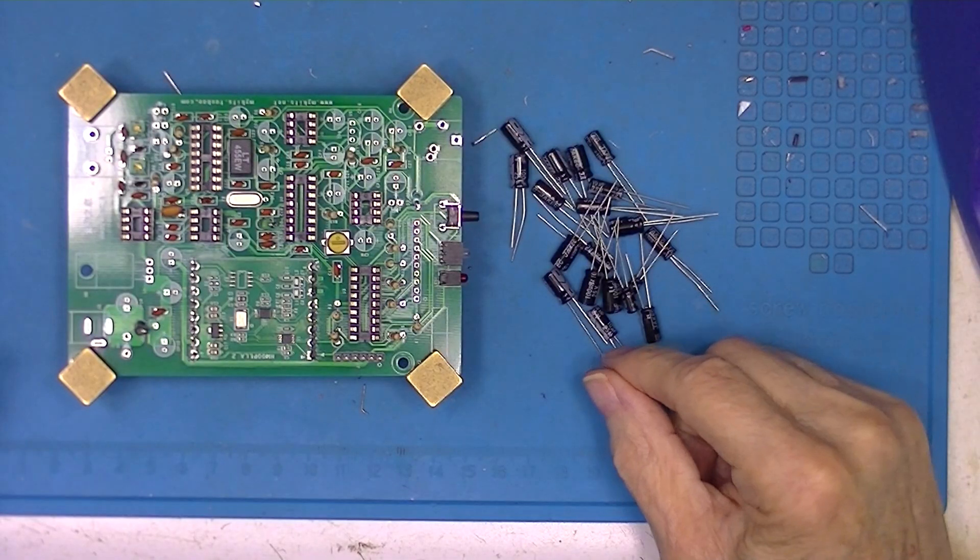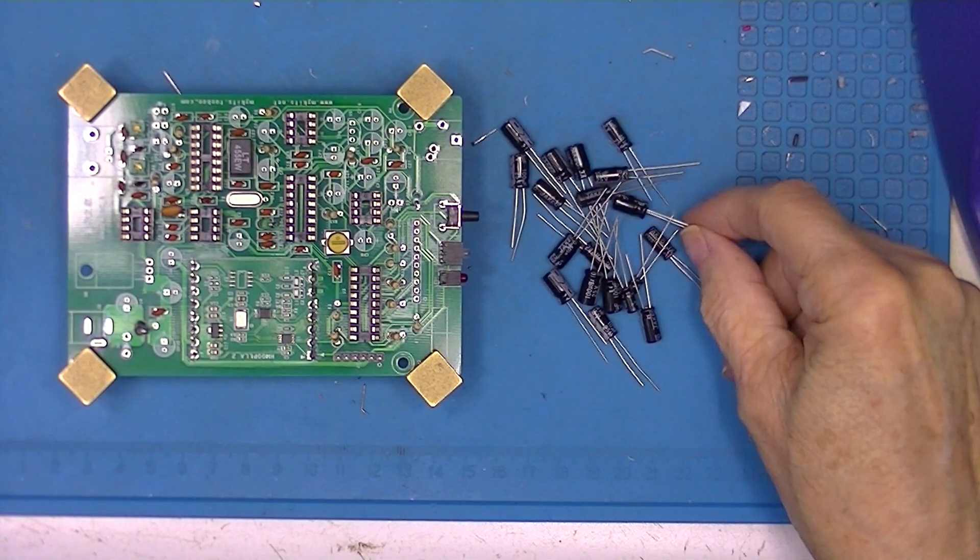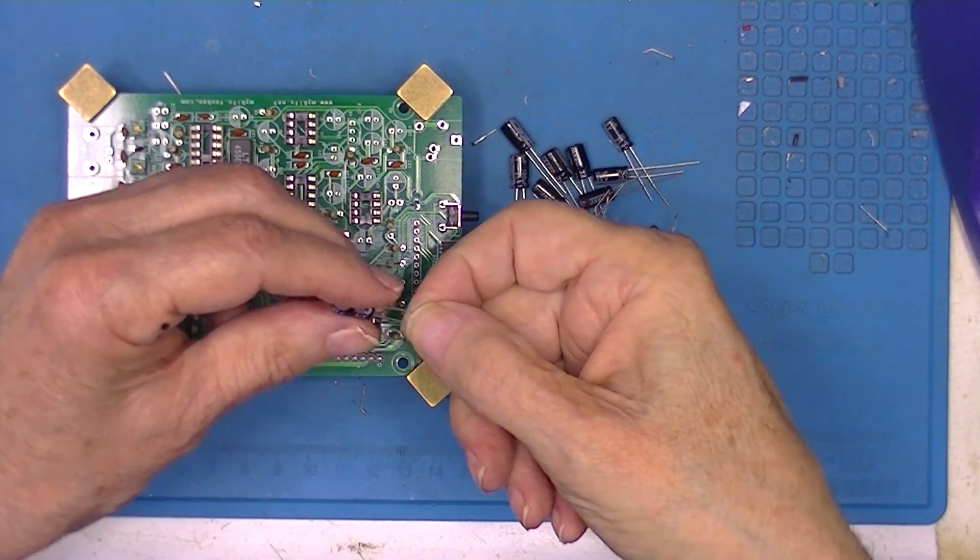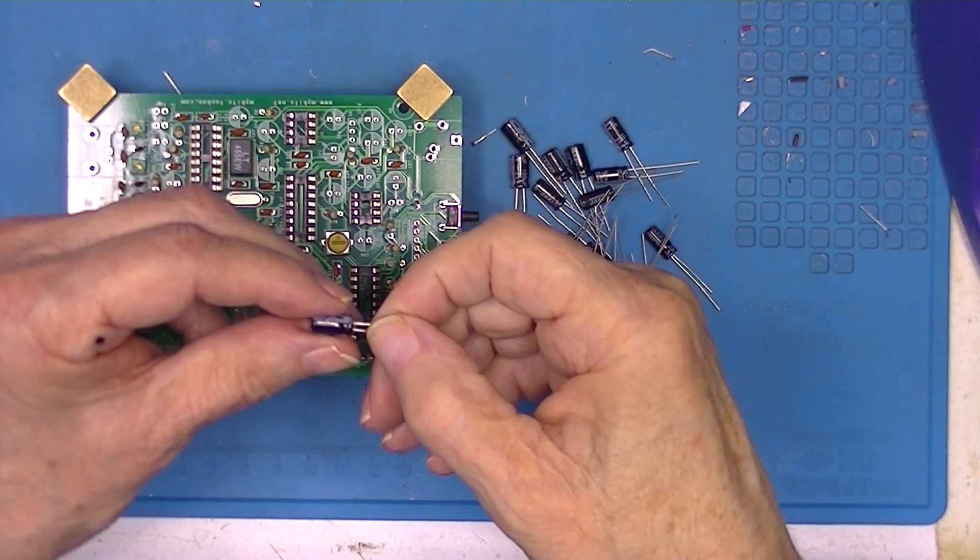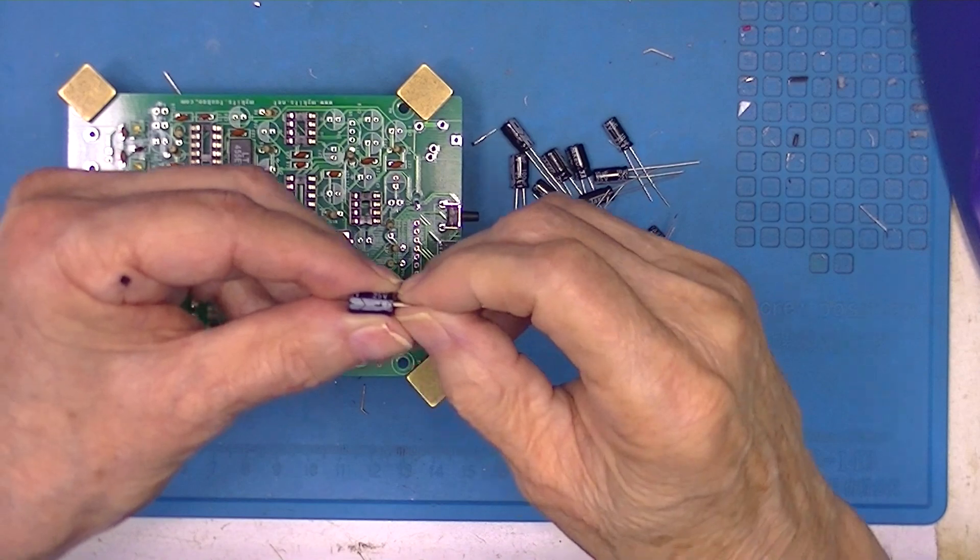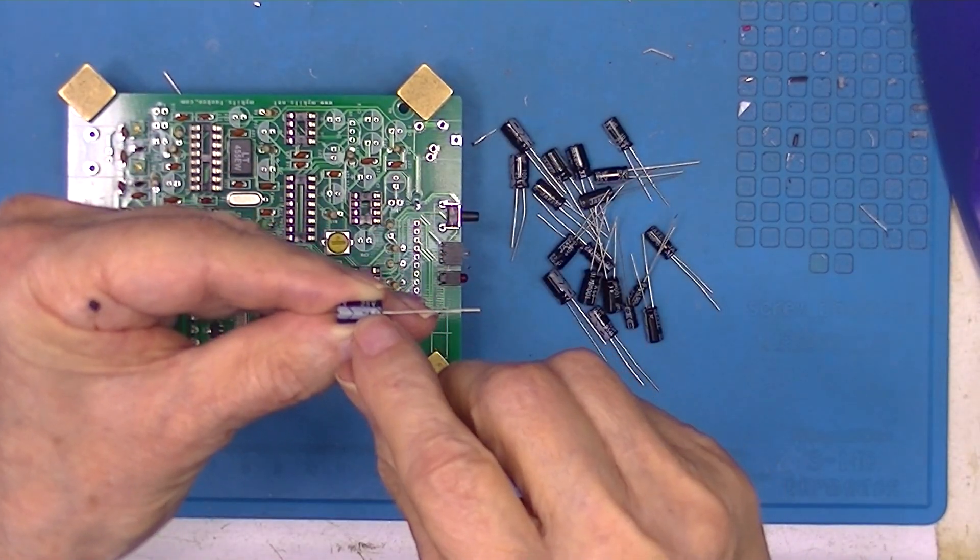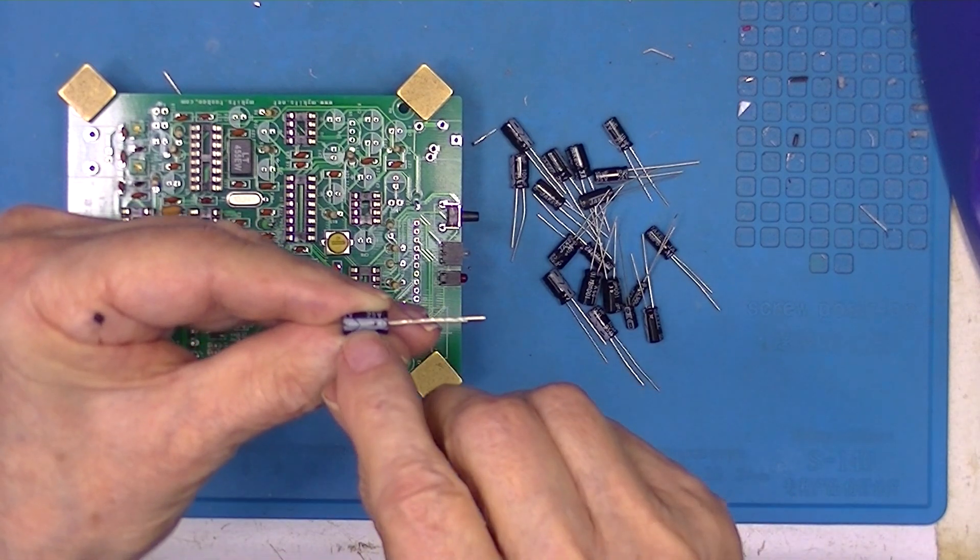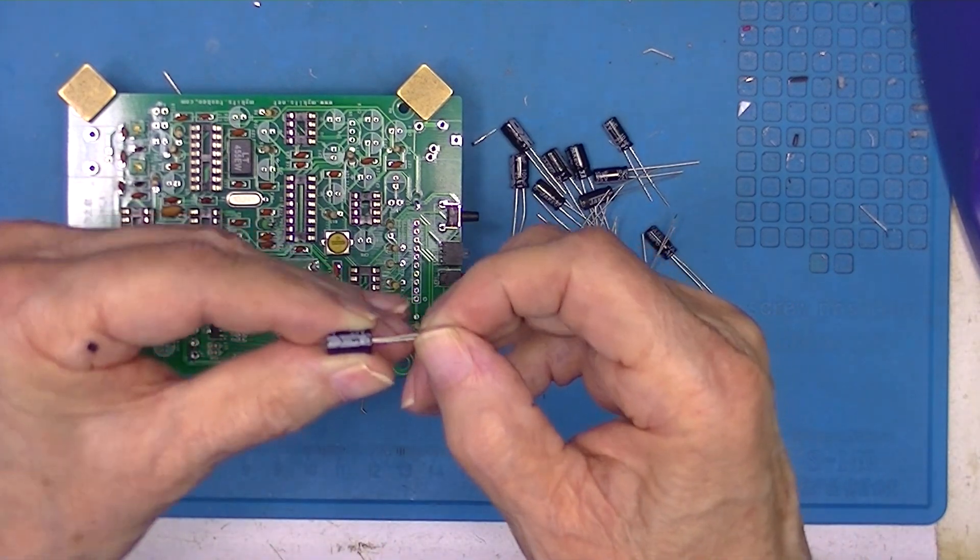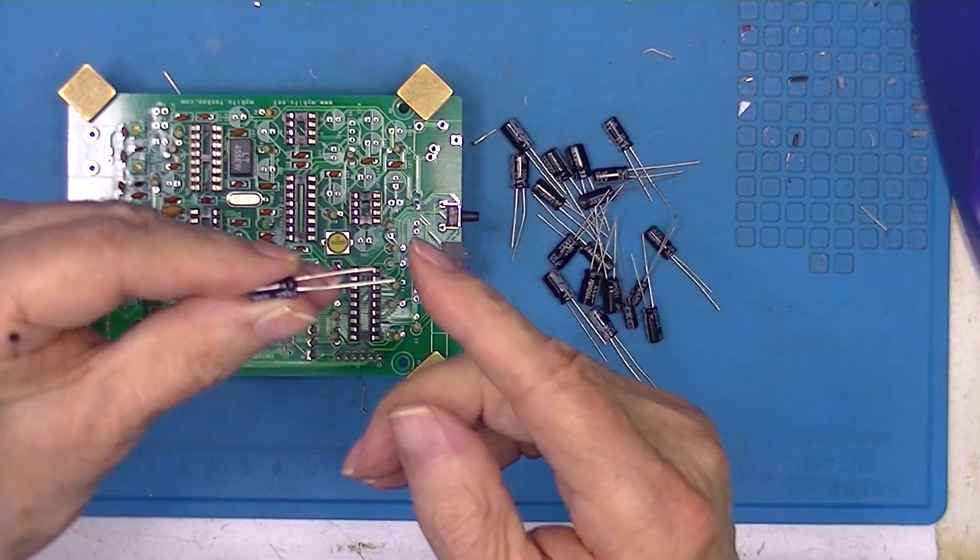I'm going to install these electrolytics. There's nothing special about them. They're marked in easy-to-read letters. They all have one, well, they're two-lead devices. All have one lead next to the white marked area and the other lead is longer.